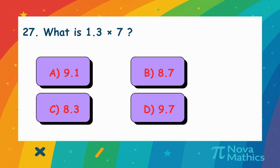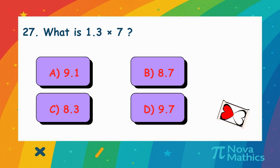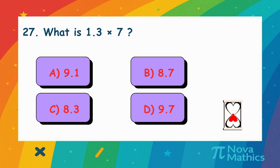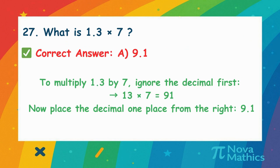26. What is 1.3 times 7? Let's multiply 1.3 by 7. First, think of it without the decimal.